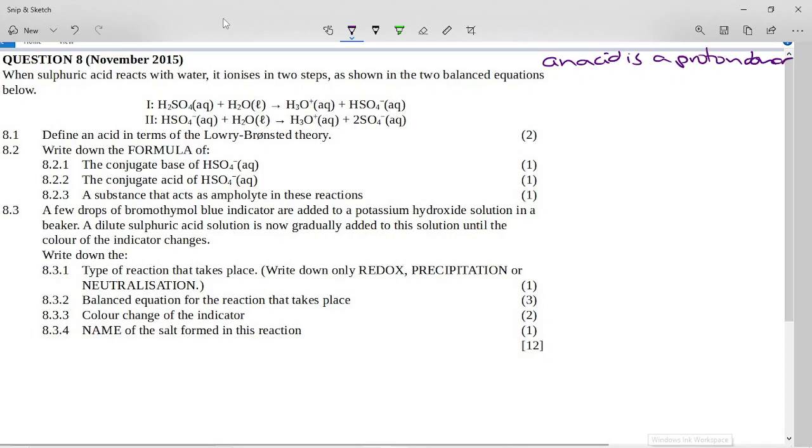Now it says write down the formula of the conjugate base of HSO4 minus. So if you want the conjugate base then it means HSO4 minus is acting as an acid. Remember that if you're going to talk about a conjugate base and acid pair, the only difference is an H plus. The one with an H plus goes to the other and you can look at it in both directions.